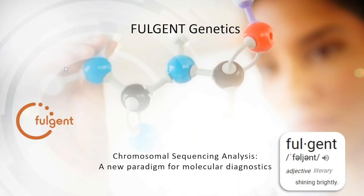Our speaker today is Dr. Sam Strom. He's the American Board of Medical Genetics and Genomics Lab Director in Clinical Medical Genetics. After doing his graduate work at Dr. Sam Nelson's laboratory at UCLA, he did a research postdoc with Michael Gorin at the Jules Stein Institute working on Stargardt's disease, and also did clinical training with Dr. Wayne Grody. He joined us at Fulgent earlier this year. He's helped design and implement our two newest tests: our expanded carrier screening beacon test and our chromosome sequencing analysis.